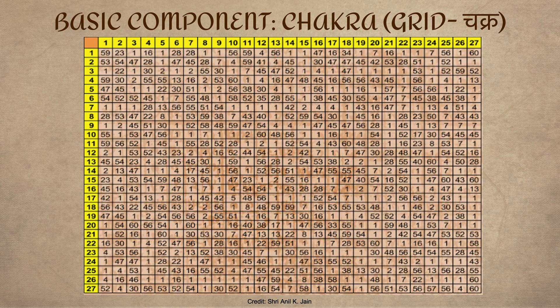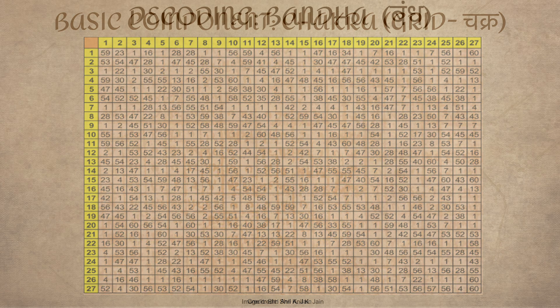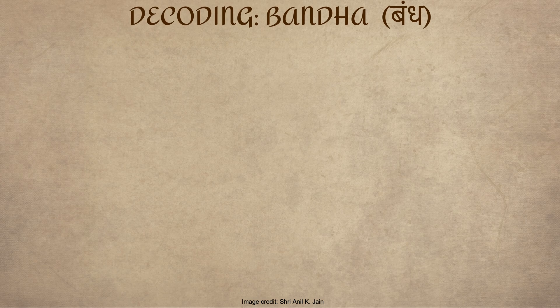Now let's see how we uncover them — how do we make sense of this two-dimensional numerical grid? How do we transform it into a sequence of characters that we can actually read? This process begins with Bandhas. A Bandha is essentially a specific pattern for traversing this grid; in other words, it tells us the order in which the numbers in a Chakra are to be read. Let me explain with the help of a couple of examples.